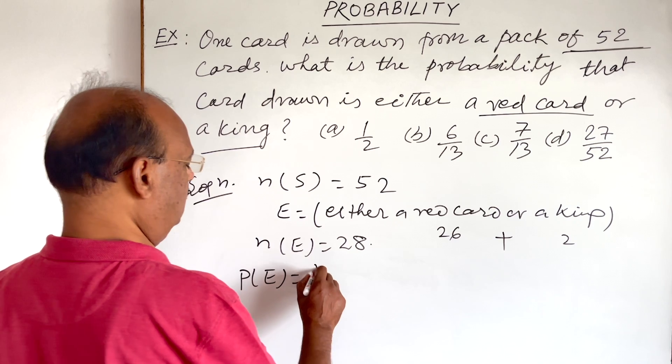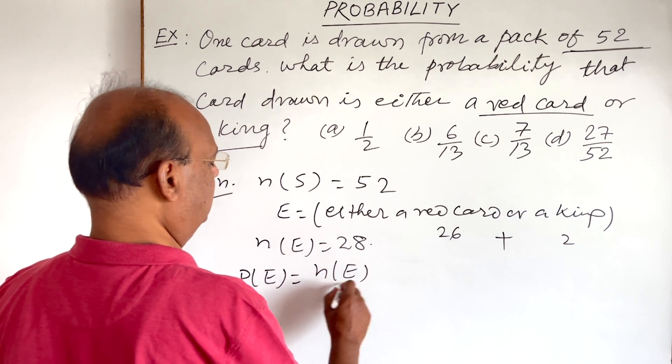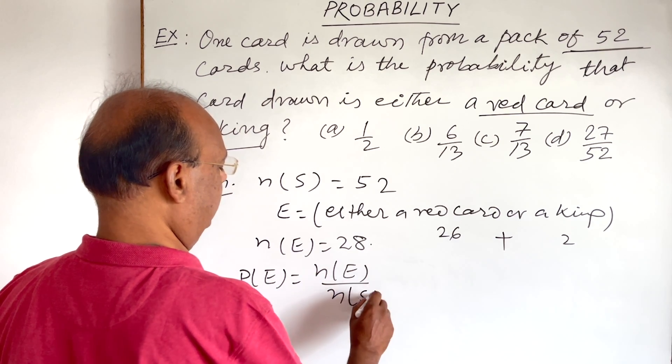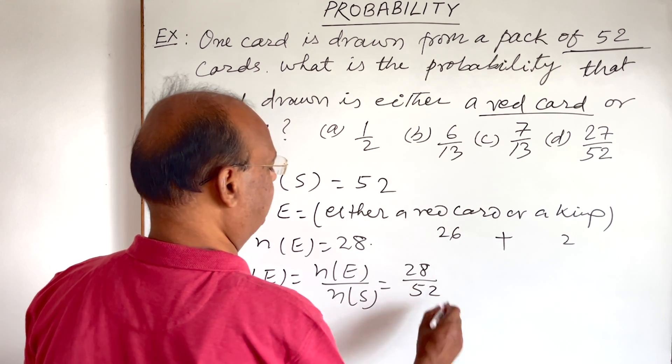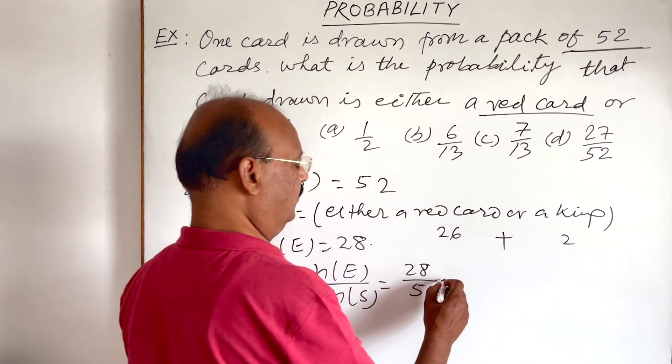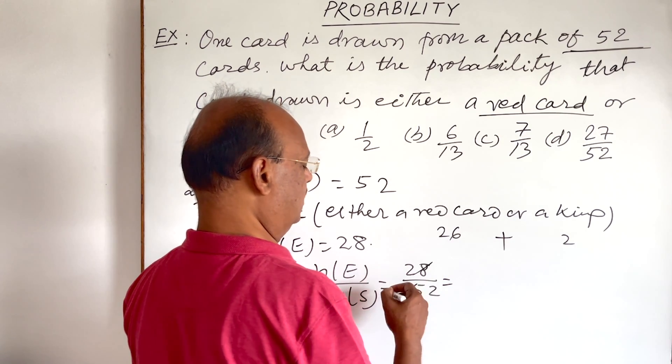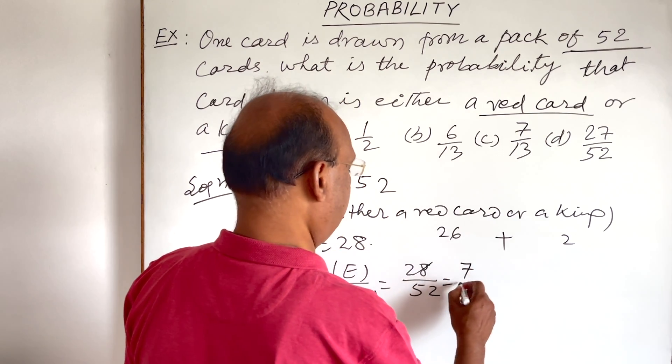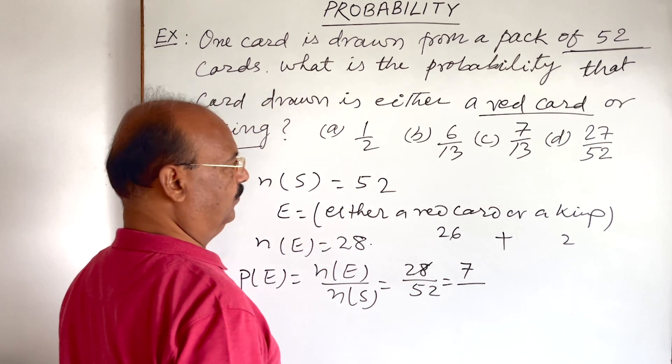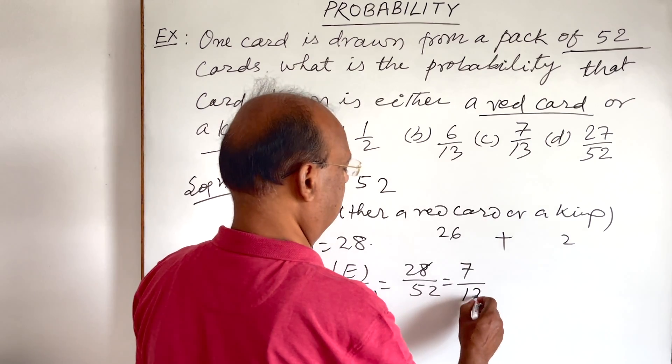This is n(E) divided by n(S). n(E) is 28 divided by 52. Simplify it. That will be cancelled with 4. This is 7 and this is 13.